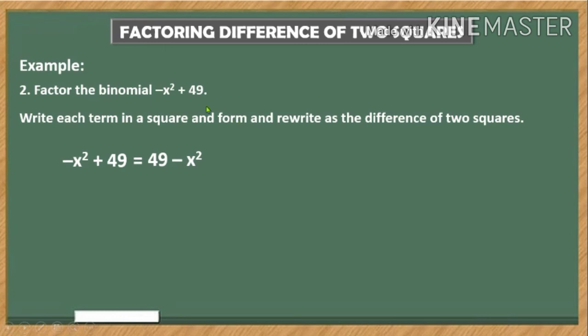Then again, write each term in a square form. There's no need here, it's already in square form. So 49 can be written in a square form as 7² minus x². The factors are 7 + x multiplied by 7 - x.